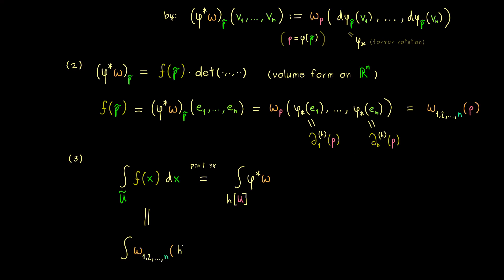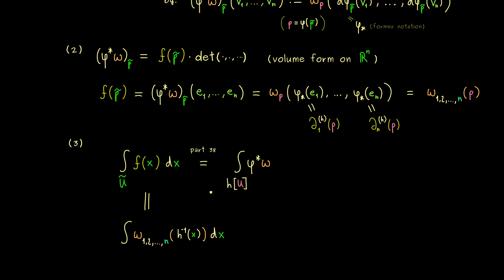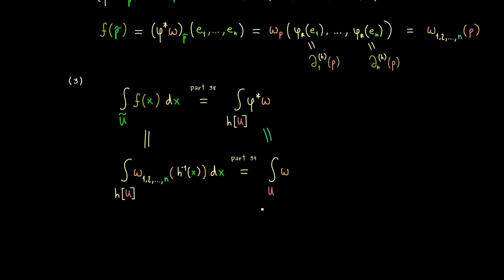The only thing we have to change is the input, because we have to transform p to p tilde, so we simply have the inverse of h inside. We still have the same domain u tilde or h of u. This is exactly what we used in part 39 for the integral of omega. So this abstract concept of an integral can be broken down in this way, and what we get is a nice equality on the right-hand side. Therefore this equality is what we can use for the definition of the integral of omega.